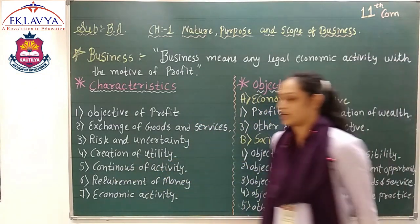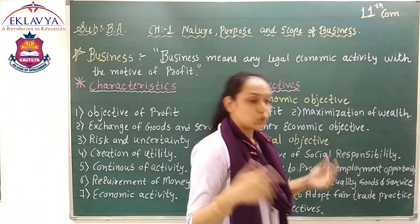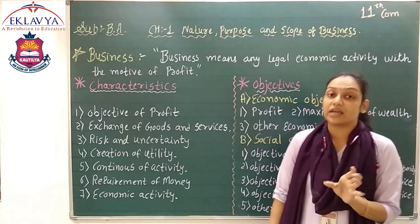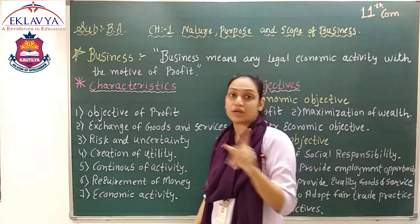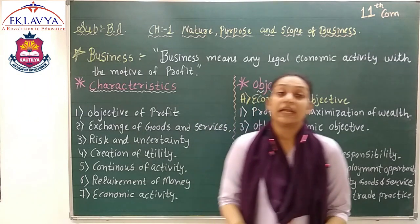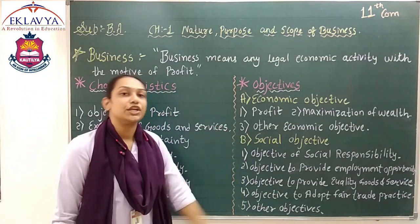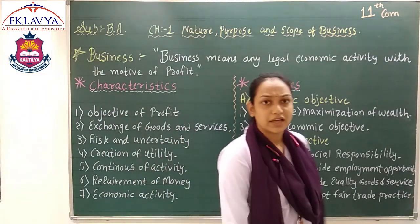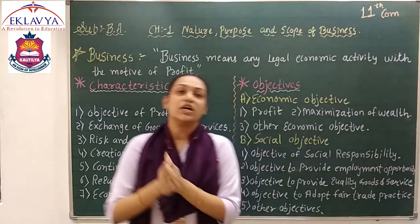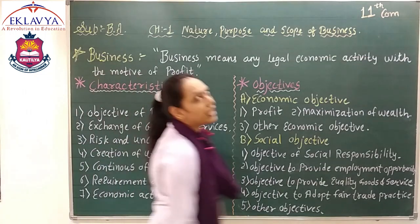The fifth characteristic is continuity of activity. Business always keeps running — it never stops. Once you start a business, it is not the case that work will stop after two or three days. Business continues as long as it exists. Yes, if you close your business, then nothing will happen. But as long as the business exists, it remains continuous. There is always something going on: bringing raw material, making sales of finished goods, managing accounts, doing advertisements — all of these are activities of the business. So we can say that business is a continuous activity.